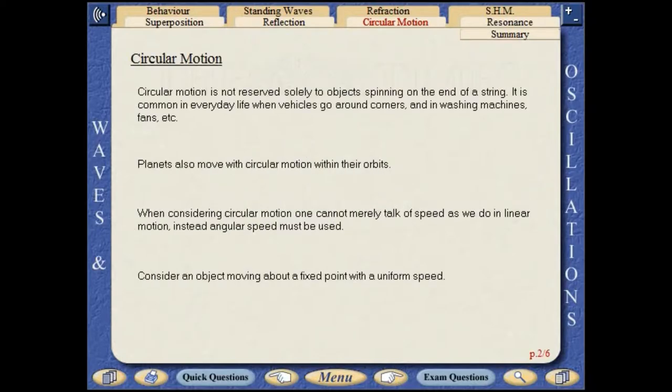Circular motion is not limited to objects spinning on the end of a string. It is common in everyday life when vehicles go around corners and in items such as washing machines and fans.